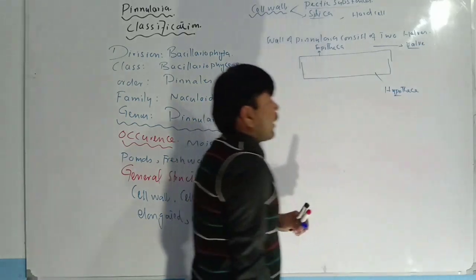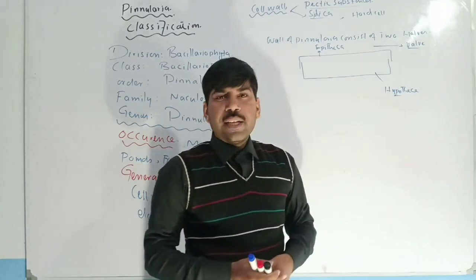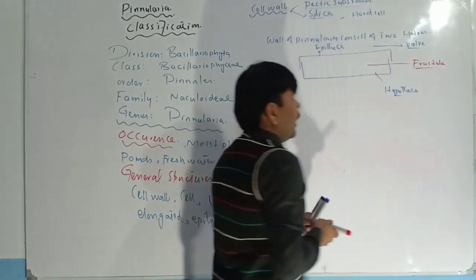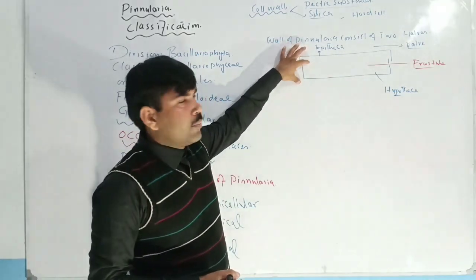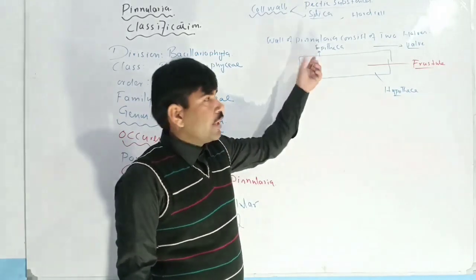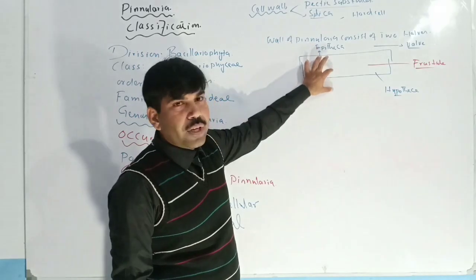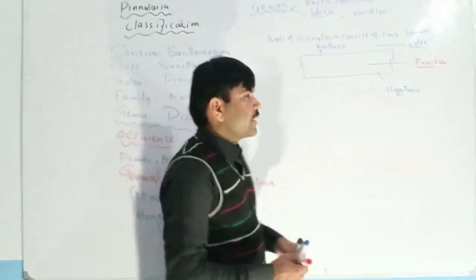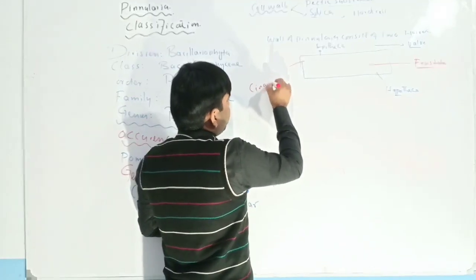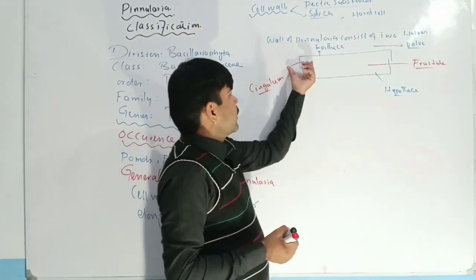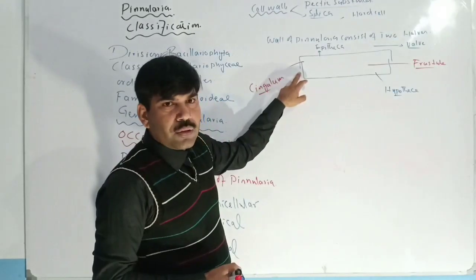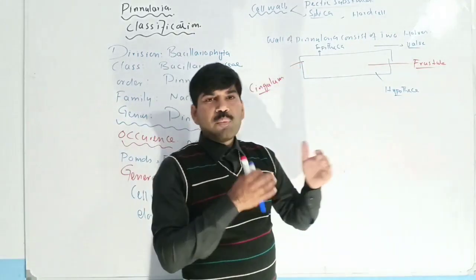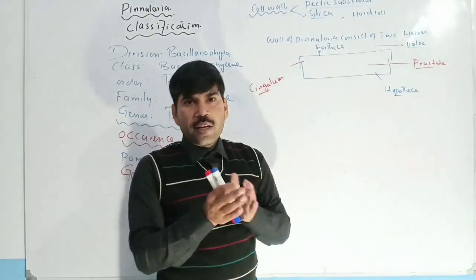The whole inner portion of this cell structure is known as the frustule. Looking at the diagram, the upper and lower margins — that is, the upper and lower plates or walls — are connected on both sides, and these connecting points are known as cingulum. This is the upper cingulum and this is the lower cingulum. At these margins, both the hypotheca and epitheca are connected to each other.